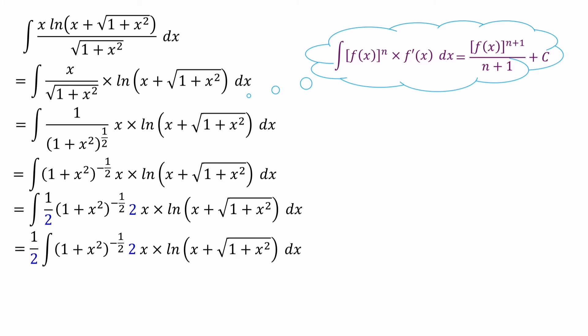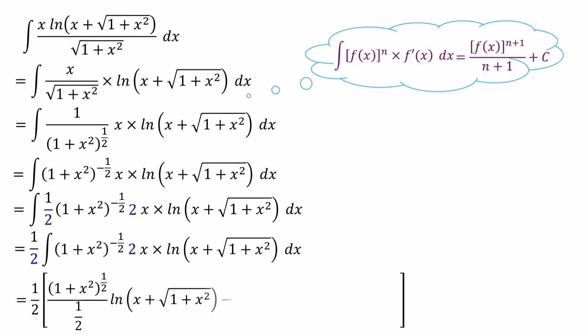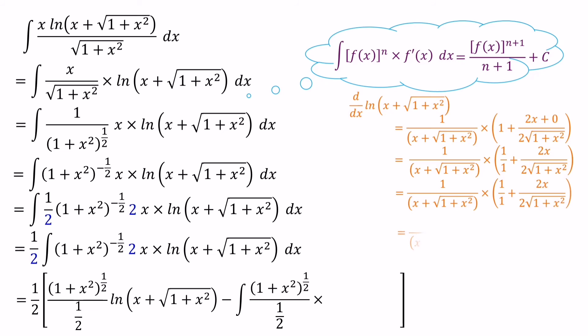Now we apply the integration by parts method. The integral of (1 plus x squared) to the power of minus half times 2x can be written as (1 plus x squared) to the power of half over half, since f(x) equals (1 plus x squared), n equals minus half, f'(x) equals 2x, and n plus 1 equals half. We write ln(x plus square root (1 plus x squared)) as it is. Then minus the integral of (1 plus x squared) to the power of half over half, times the differentiation of ln(x plus square root (1 plus x squared)), which equals 1 over (x plus square root (1 plus x squared)).